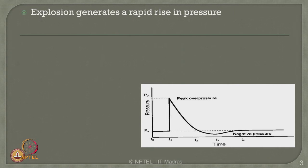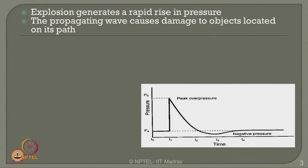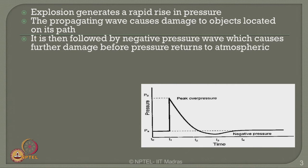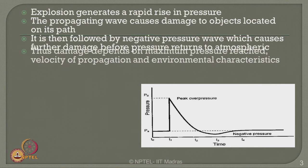Looking at the curve presented in the slide: an explosion generates a rapid rise in pressure from atmospheric to P naught, which is called peak overpressure, in an instantaneous time from T0 to T1. Subsequently, after P0 is reached, the pressure drops and goes to suction pressure below atmospheric before returning to atmospheric pressure. So the damage caused by the explosion is the area under this curve.